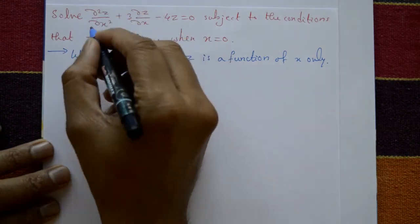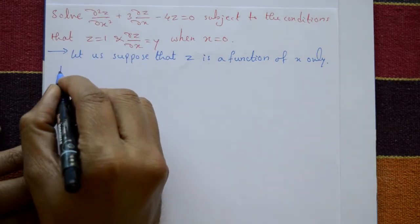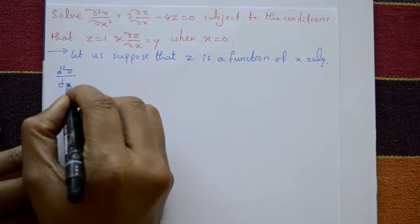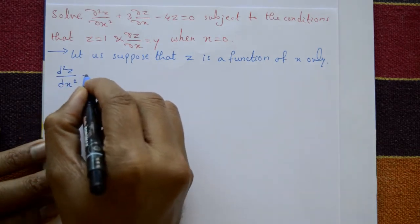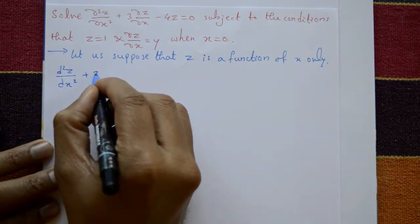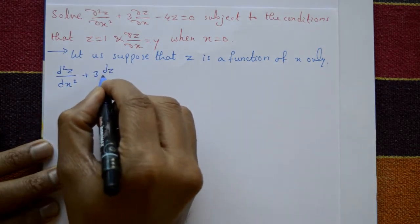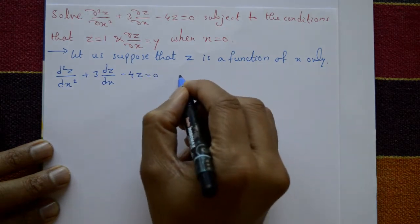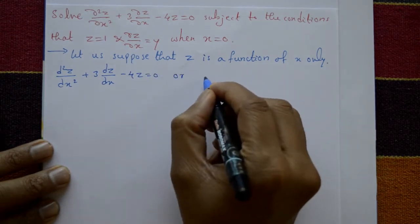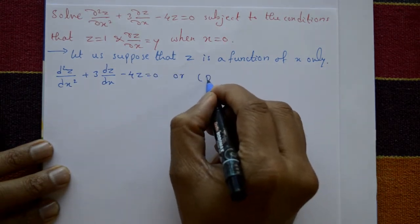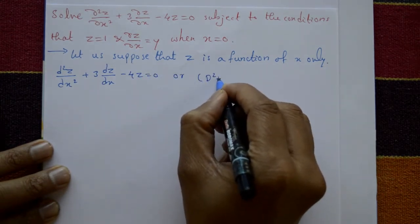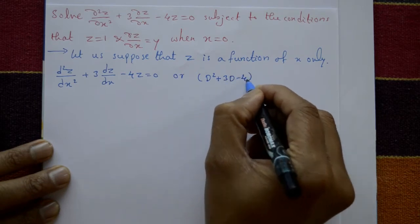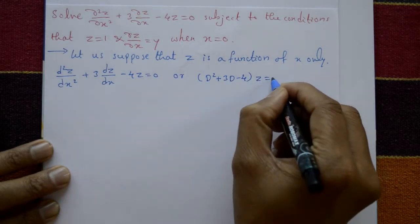Now convert the PDE into an ODE: d²z/dx² + 3·dz/dx − 4z = 0, or equivalently (D² + 3D − 4)z = 0, where D stands for d/dx.